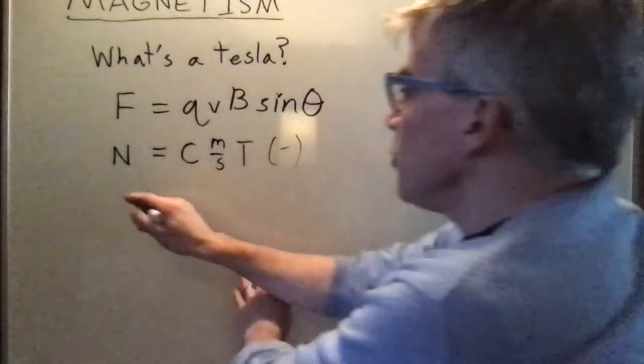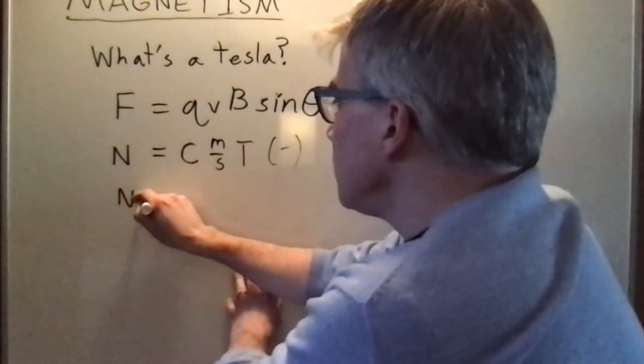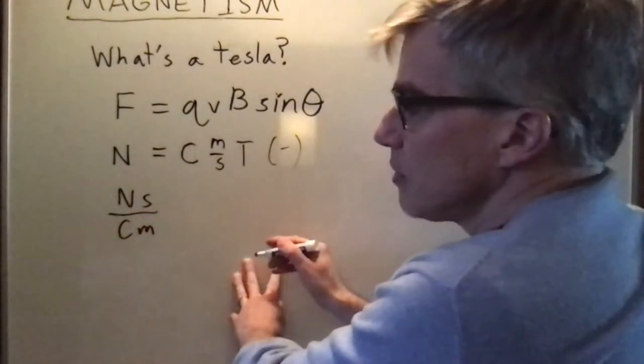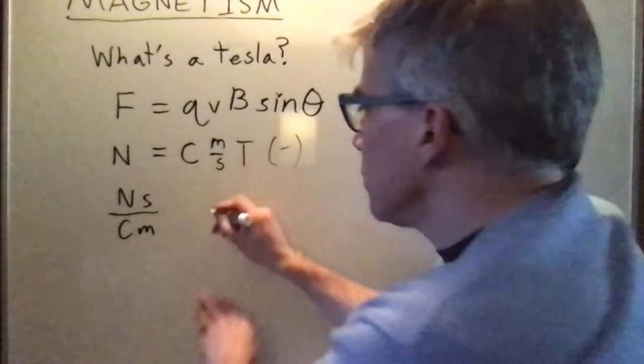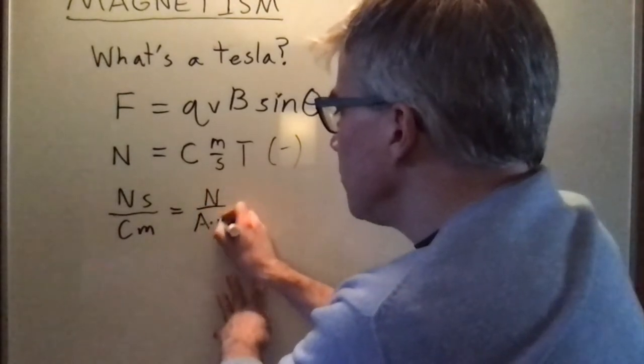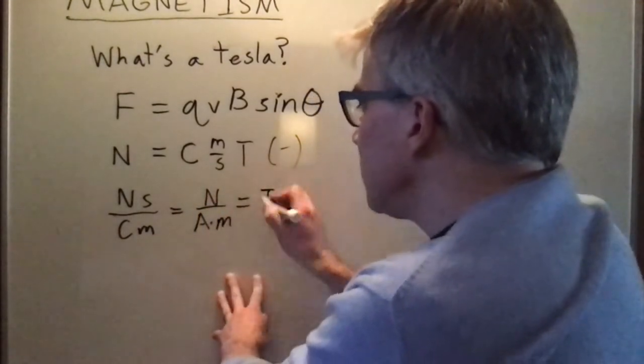So if we're going to solve that we would get Newton times second over coulomb meter, and a coulomb per second is an ampere, so we can also call it a newton per amp meter, and that is a Tesla.